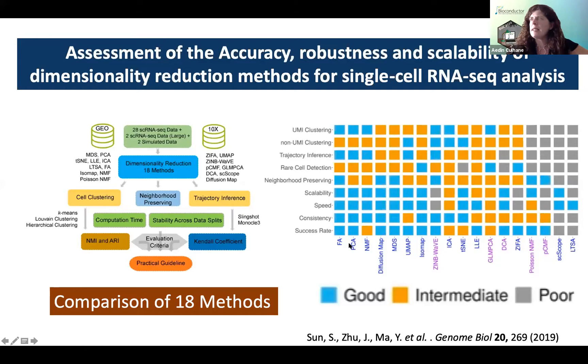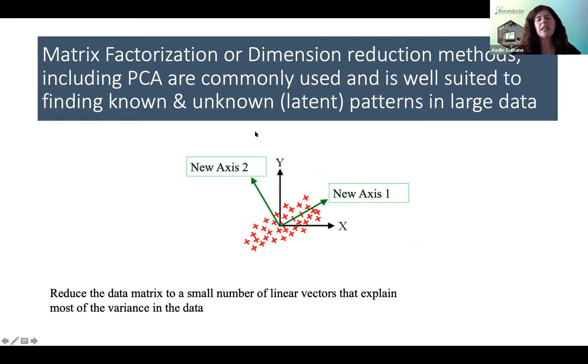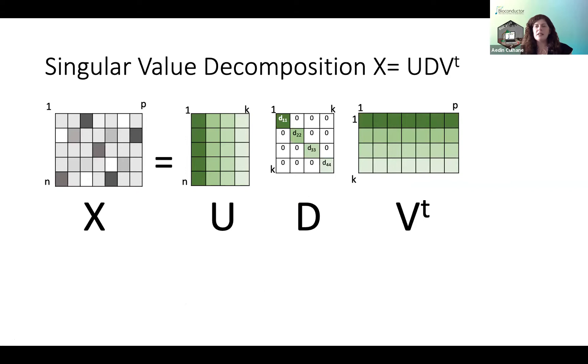What is it? Well, the idea behind a matrix factorization or dimension reduction, and I keep saying these words interchangeably on purpose, is to find the smallest number of linear vectors that explain most of the variance in the data. And by and large, the way that this is done is via SVD. So it's important that we actually get a concept of what this is. So singular value decomposition, or SVD, is a matrix operation that given a matrix, it produces three matrices.